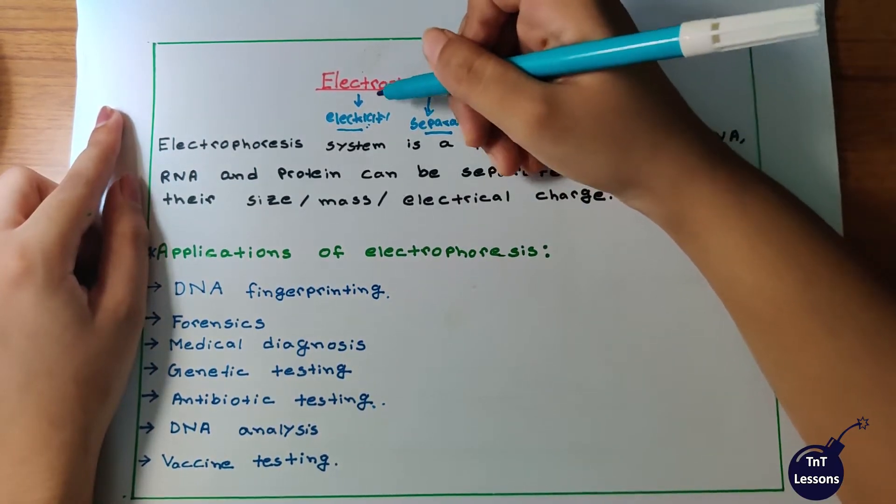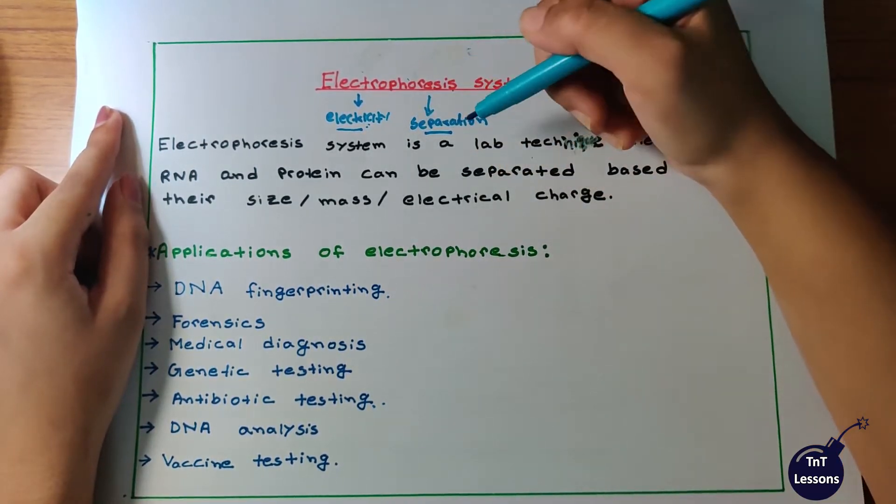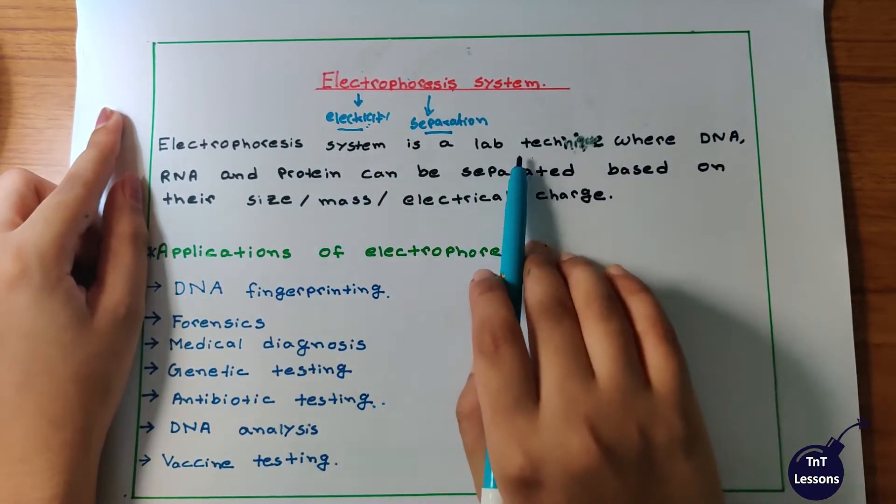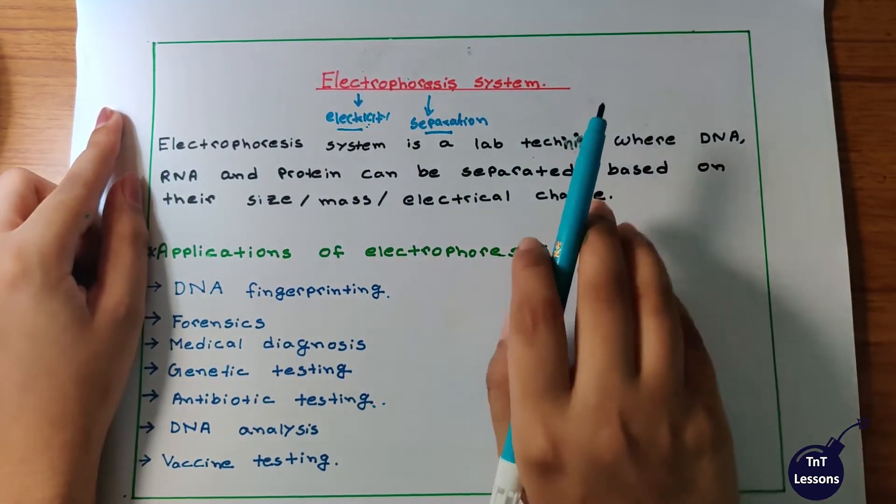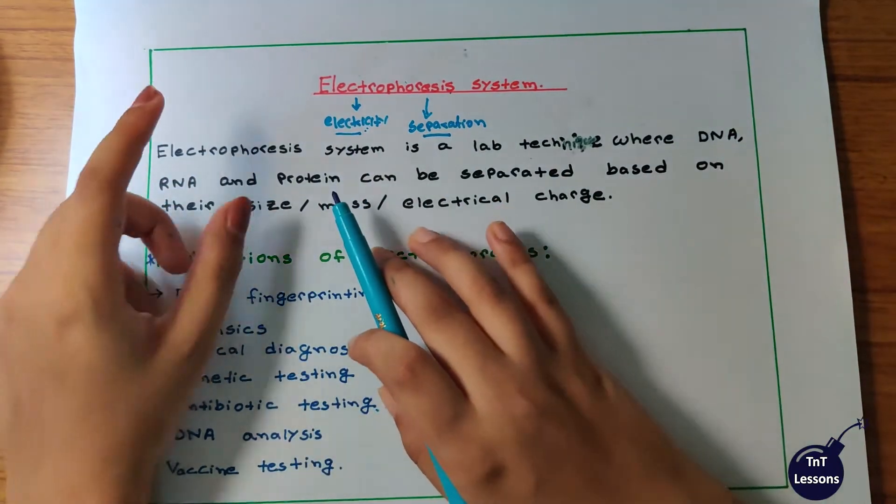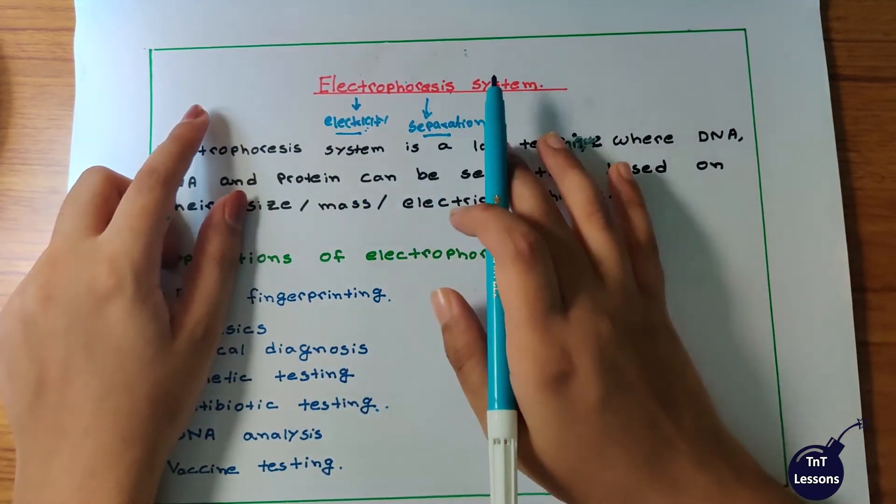Electrophoresis: electro means electricity and phoresis means separation. Electrophoresis system is a lab technique where charged biomolecules can be separated based on their size, mass, and electrical charge.